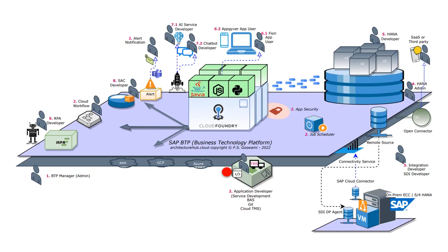Then comes the application developer, who is kind of the hero in this picture. This person is mainly developing applications and services using the Cloud Application Programming Model in Business Application Studio, maintaining code-based versions and collaborating with others using Git, deploying applications in Cloud Foundry runtime, and also responsible for application service security using App Router and XSUAA-based microservices. Additionally, the application developer is responsible for job scheduling, batch data processing, developing alert notification services, and cloud workflow-based developments.